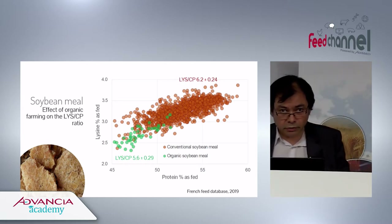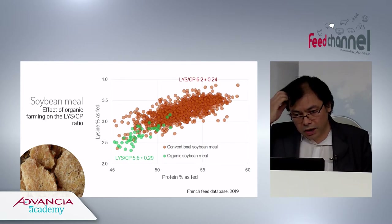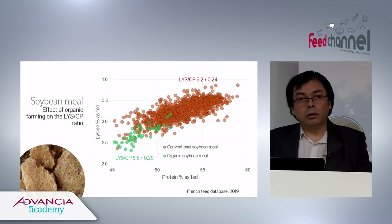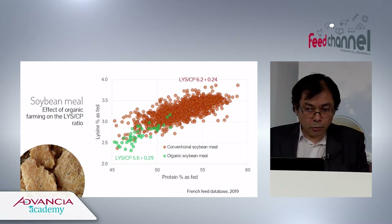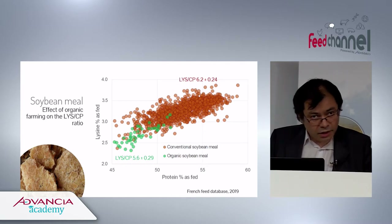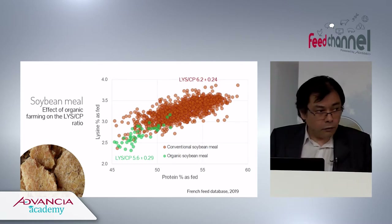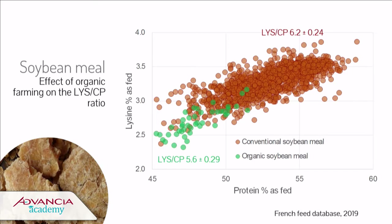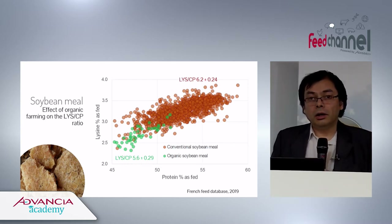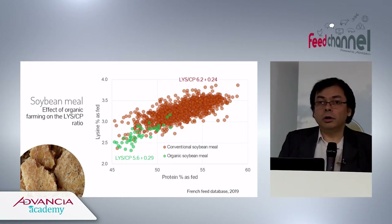Sometimes variations are more complicated to understand. For soybean meal, a graph of protein versus lysine shows that organic soybean meal has a significantly lower ratio of lysine to crude protein than conventional soybean meal. The explanation is unclear — possibly genetics, possibly processing differences such as not using hexane for oil extraction. The net result is a product with meaningfully lower lysine value.